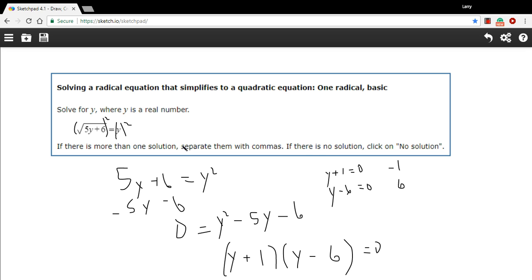So if I take 6 and plug it in here, I'd get 5 times 6. That's 30 plus 6 is 36. Take the square root of that, you get 6 and that equals 6. Okay, so 6 equals 6. That makes sense.